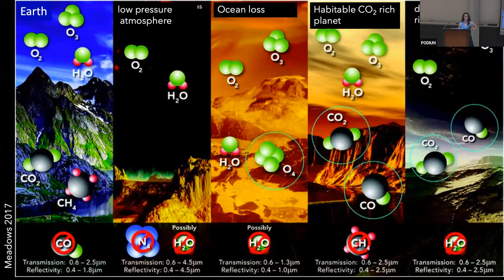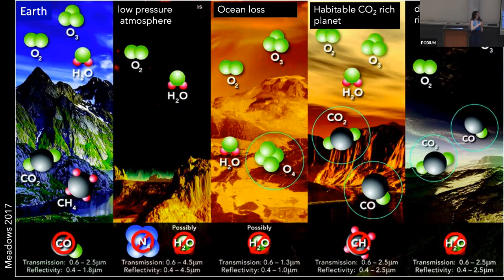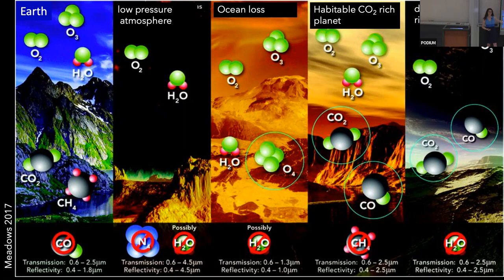This figure from Vicki's review paper shows an overview of all of the processes that can produce oxygen from various sources. We have Earth on the left-hand side, and I'm going to walk through each of these panels and talk about all of these different sources of oxygen and their red flags — things you don't want to see if you're trying to determine whether the oxygen is biological or not.